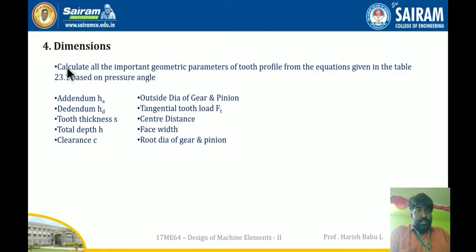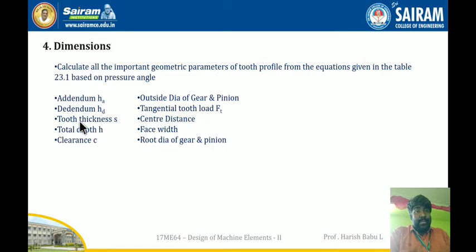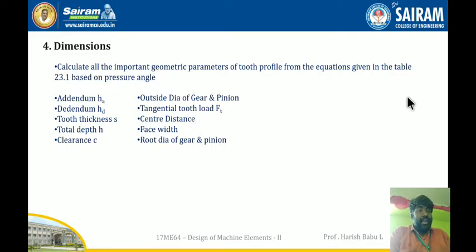The next step is calculating dimensions, which can be obtained from table 23.1 based on the pressure angle — either 14.5°, 20° full depth, or 20° stub tooth profile. The quantities to calculate include: addendum (a), dedendum (hd), tooth thickness (s), total depth (h), working depth (s'), clearance (c), outside diameter of gear and pinion, tangential tooth load Ft, center distance (A), face width (b), and root diameter of gear and pinion. Any other required data can also be calculated at this stage.